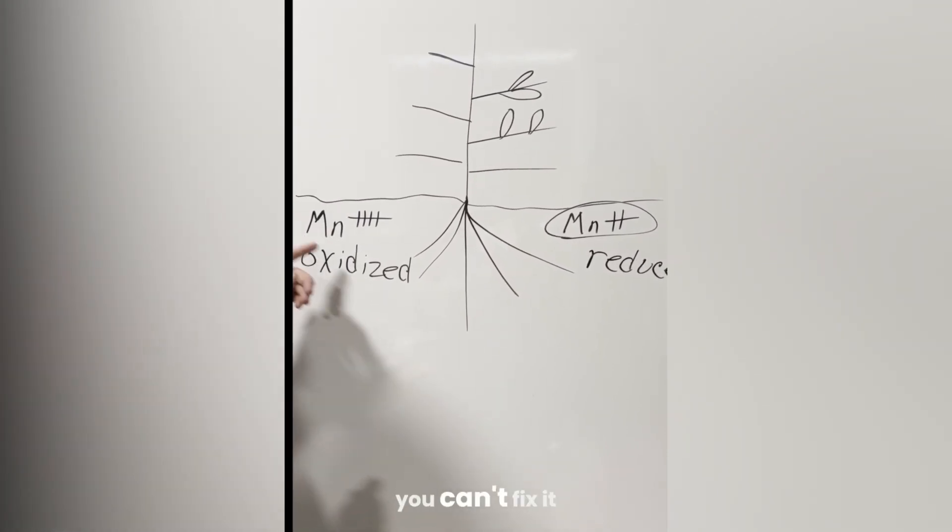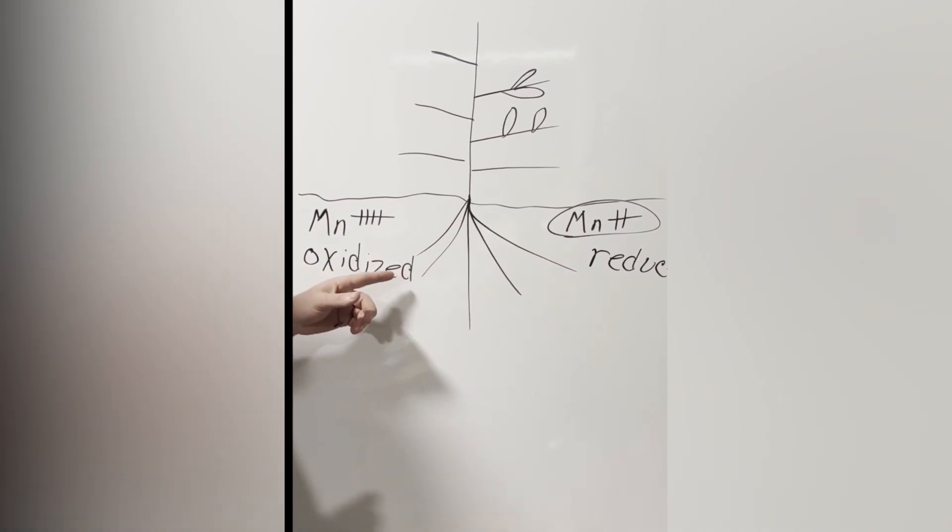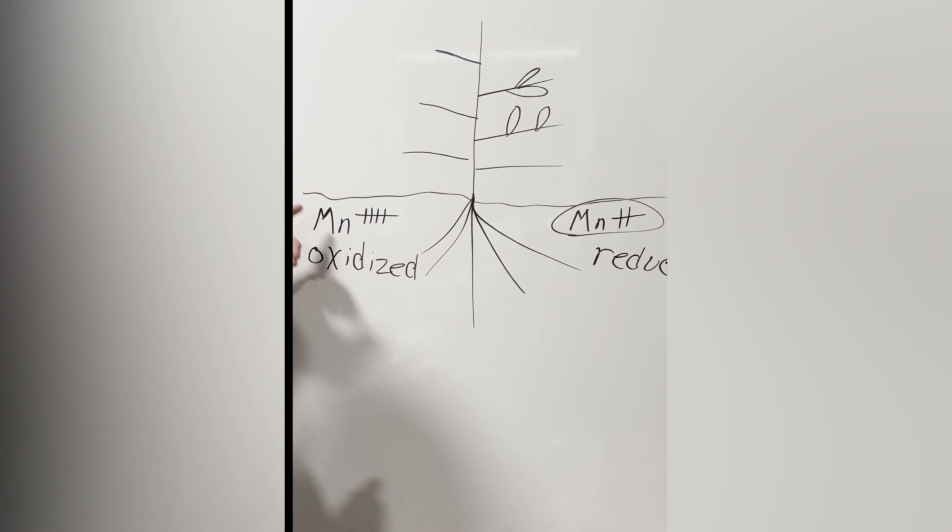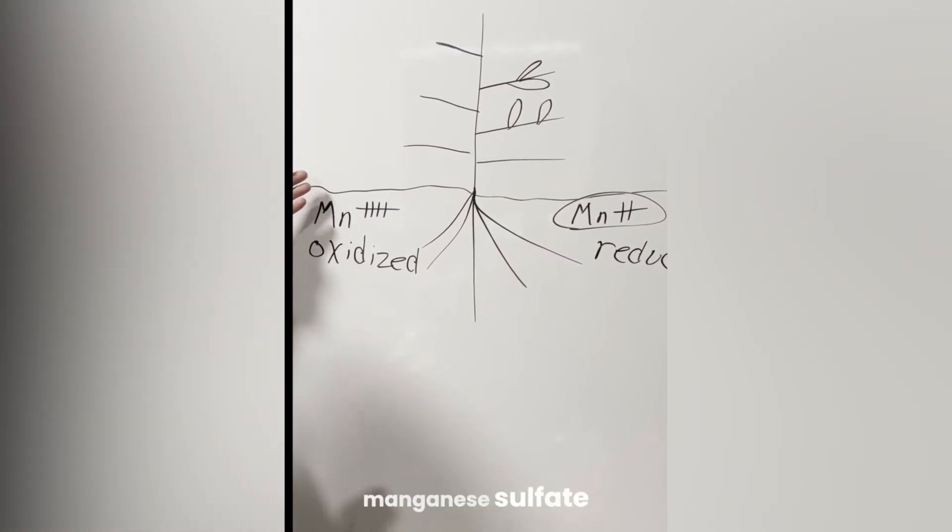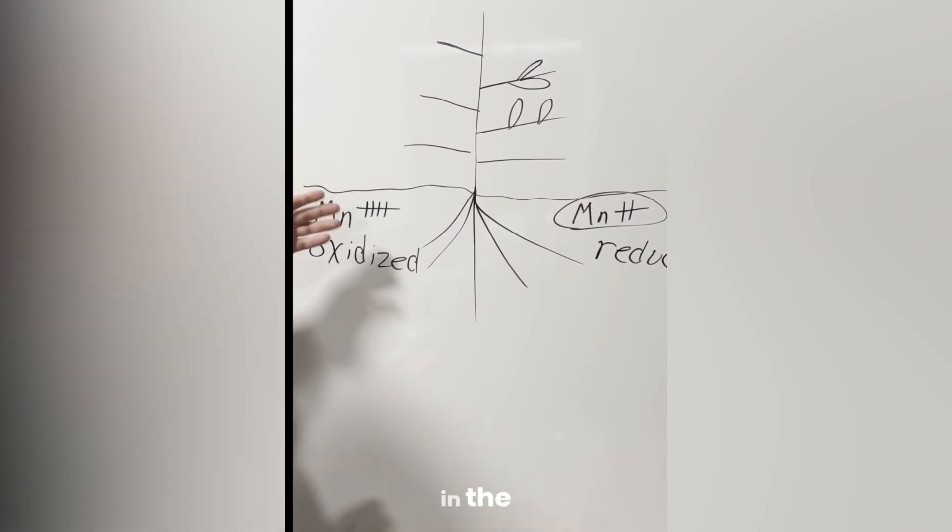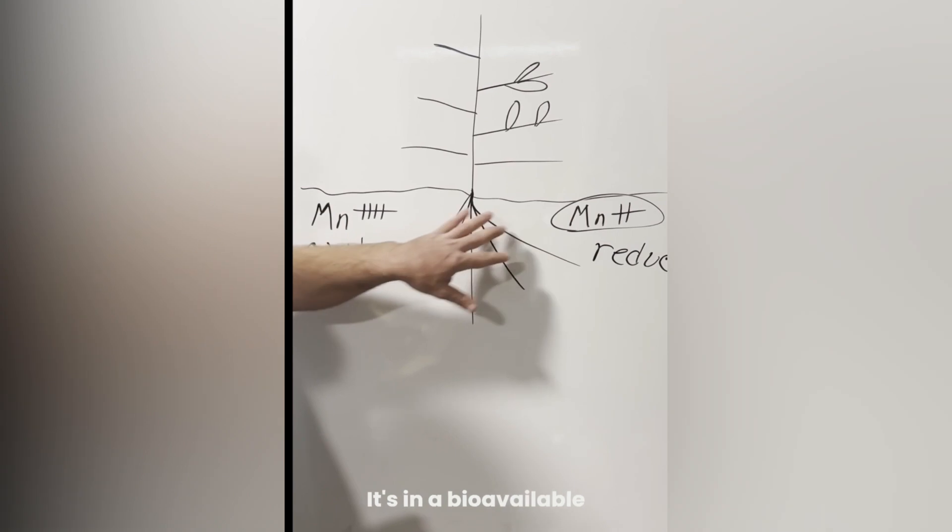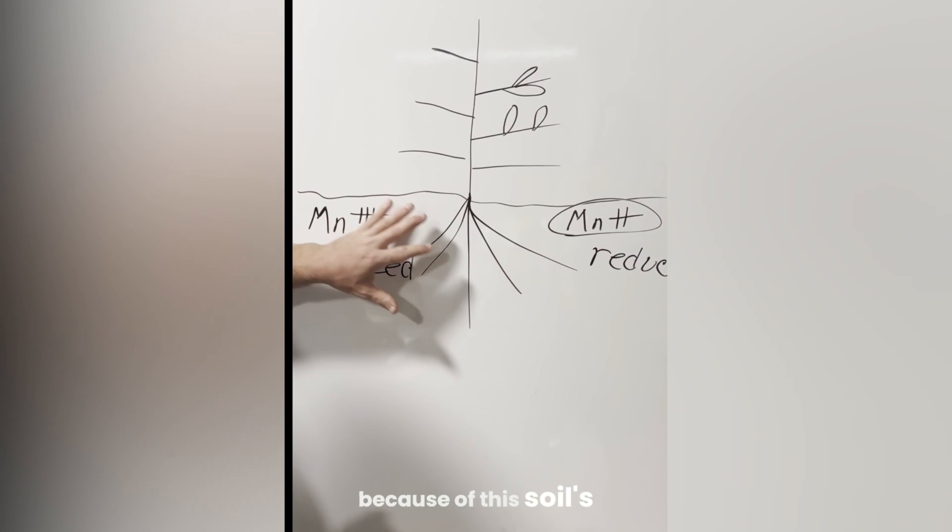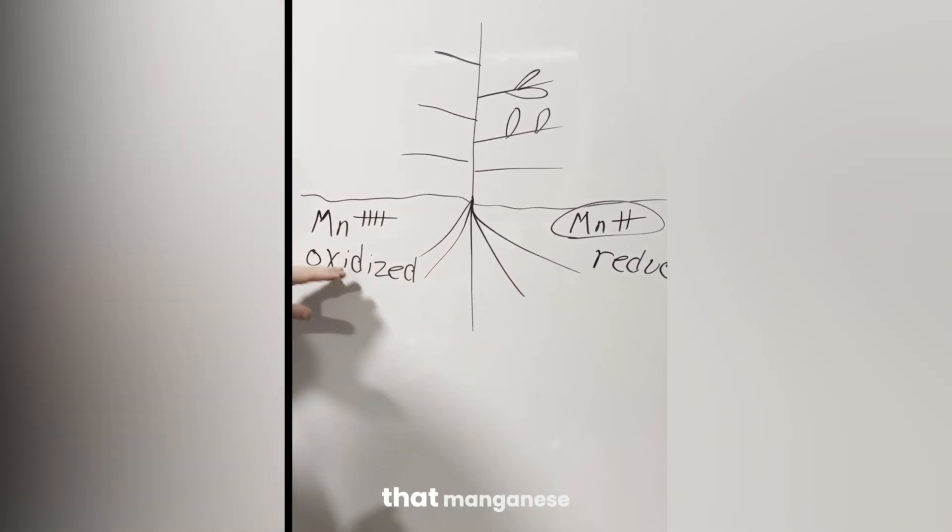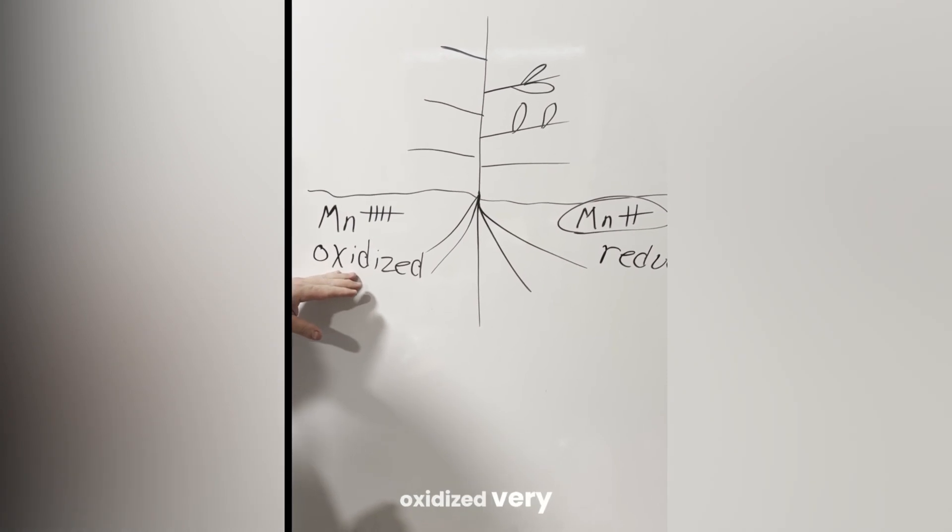but you can't fix it with a soil application. And this is the conundrum. When we put, let's say, manganese sulfate for example, manganese sulfate in the bag is in the reduced form, it's in a bioavailable form. But when you add it to the soil, because of this soil's oxidation state, that manganese sulfate becomes oxidized very quickly.